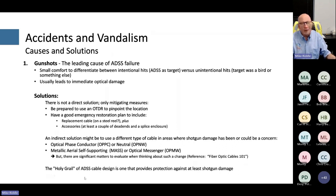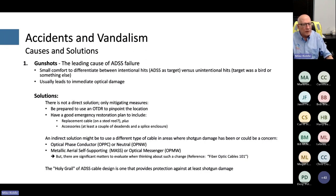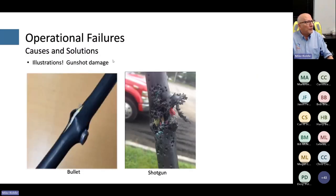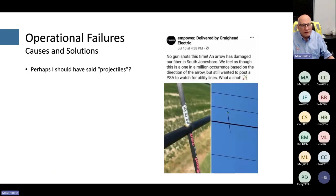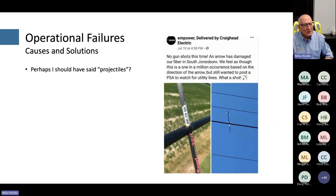It remains the holy grail of ADSS design to come up with a cable that's resistant to shotgun damage. NCAB has done some research on that but hasn't come up with anything considered effective yet. Shown here are pictures of gunshot damage — a literal bullet that hit a cable, a shotgun blast pattern, and even an arrow that penetrated an ADSS cable.